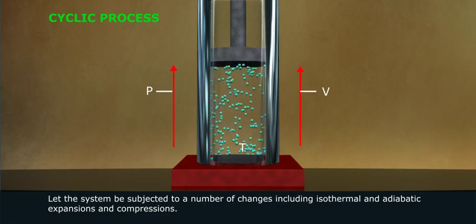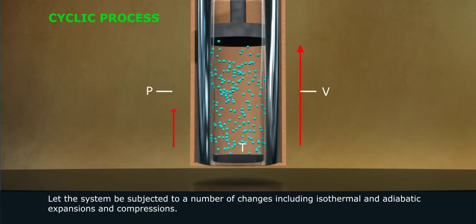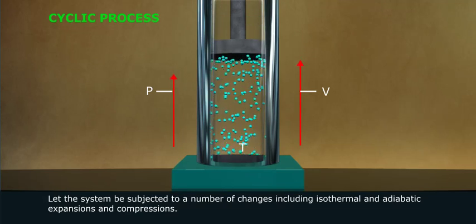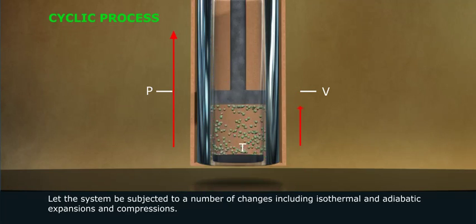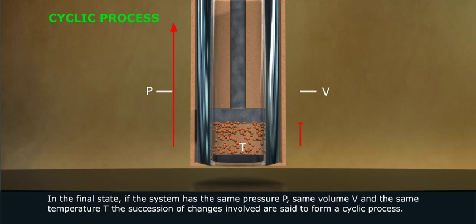Let the system be subjected to a number of changes including isothermal and adiabatic expansion and compressions. In the final state, if the system has the same pressure P, same volume V, and the same temperature T, the succession of changes involved are said to form a cyclic process.